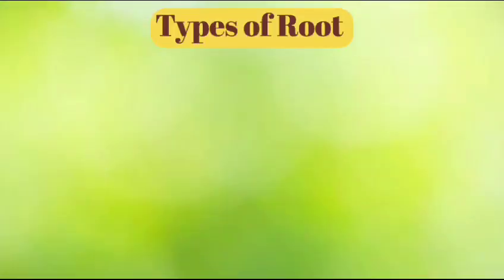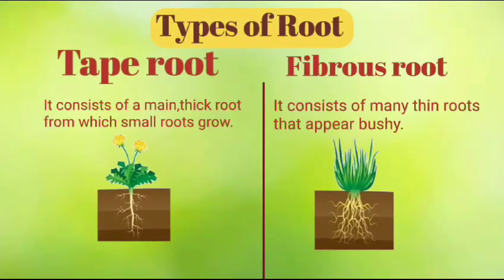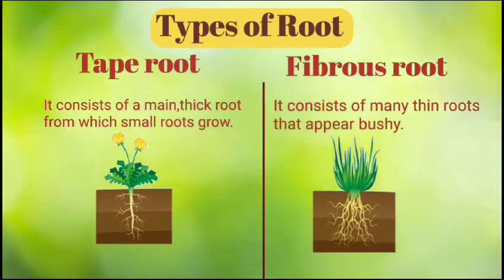Types of Roots. Taproot consists of a main thick root from which small roots grow. Plants such as bean, mustard and hibiscus have taproots.